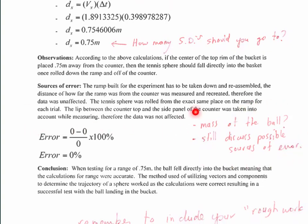Here is something that I still need. It does mention something to the effect of, does the mass of the ball affect the calculations? This student doesn't mention anything. And even though they do have an error of 0%, which they show the calculation, they should still discuss possible sources of error. Why is it that we might not be able to get it into the bucket?